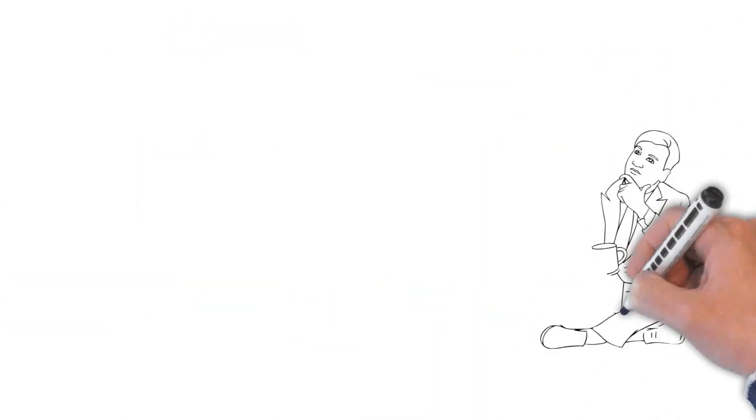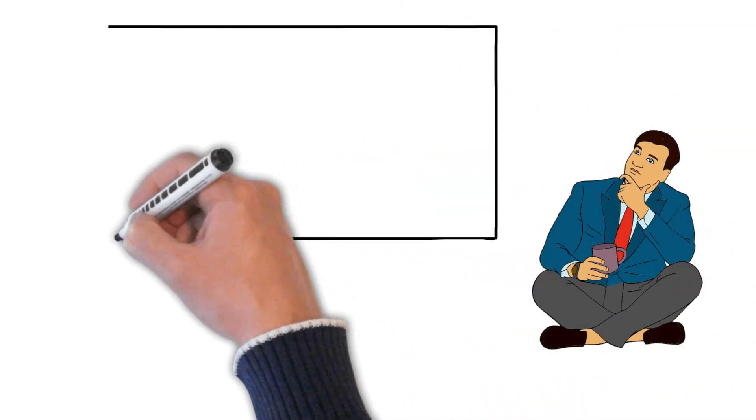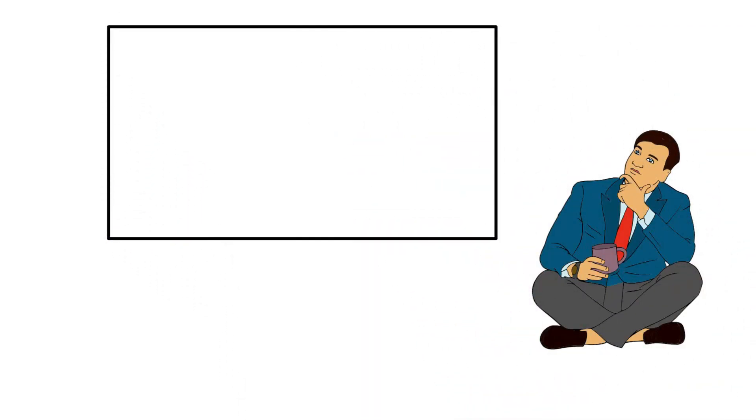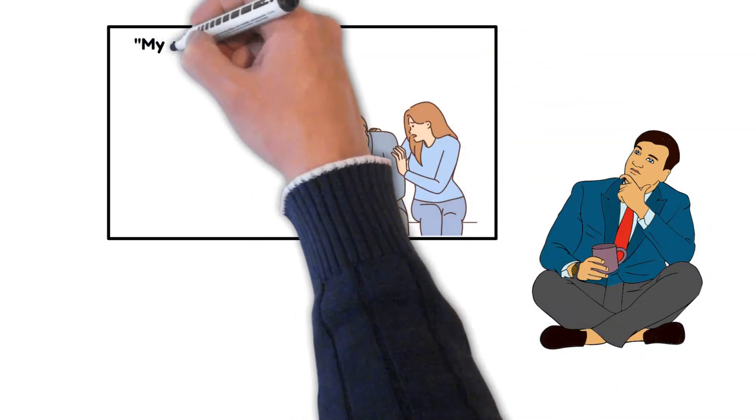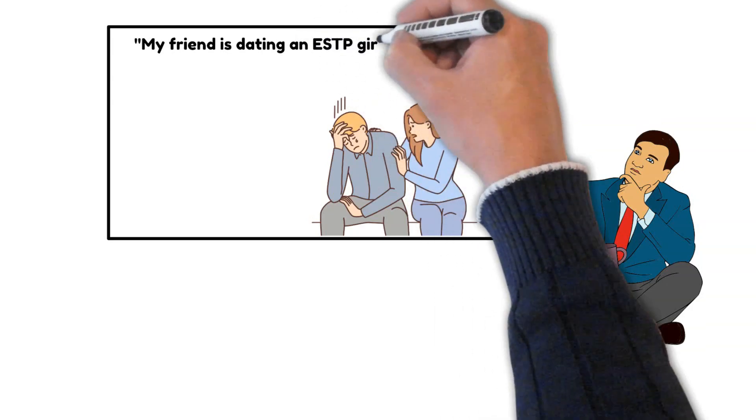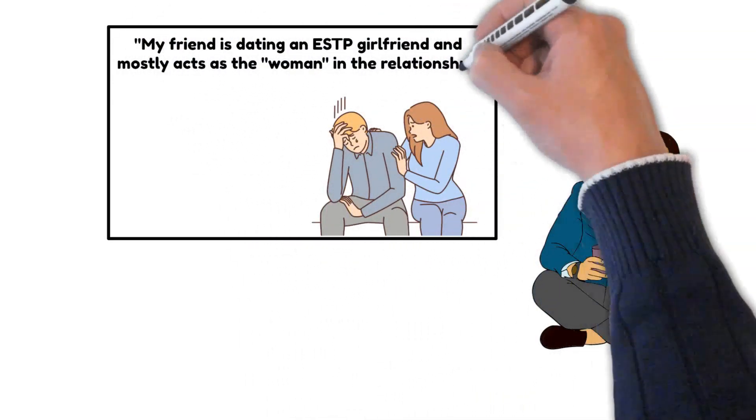In response, Sean shared an intriguing observation about a close friend of his who happens to be an ISFJ. While I'm not an ISFJ myself, I've noticed some interesting dynamics in my friend's relationship. He's currently dating an ESTP girlfriend, and what's fascinating is that my friend mostly acts as the woman in the relationship.